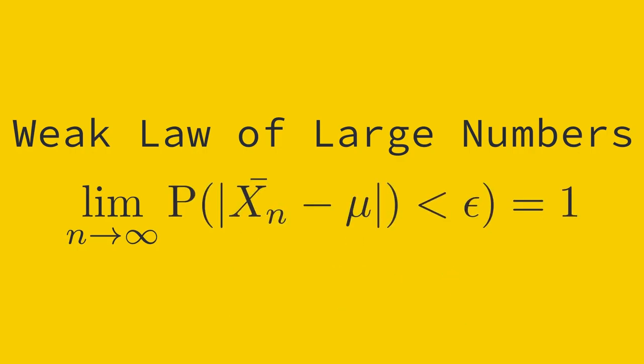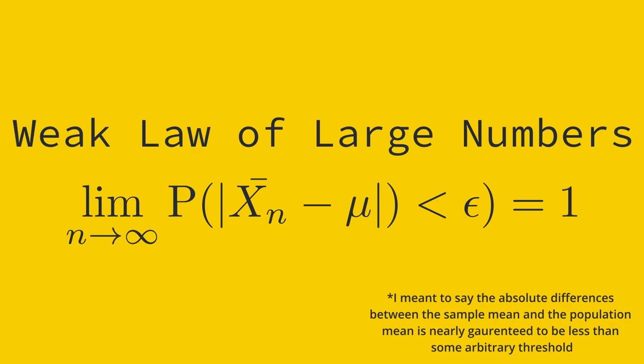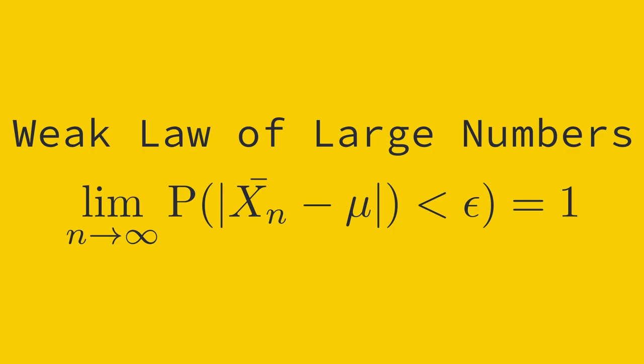Here is a rough definition of convergence. As a larger sample is taken, the means of those larger samples are nearly guaranteed to be smaller than some arbitrarily small threshold. Here is a visual representation of this definition.